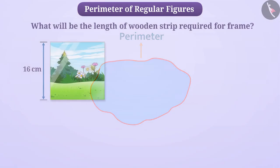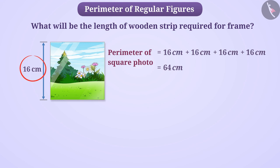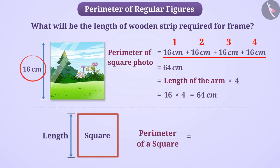The perimeter of this square photo will be 16 cm + 16 cm + 16 cm + 16 cm, which is equal to 64 cm. Here, you can see that the length of the side is added 4 times. We can write this by multiplying the length of the side by 4, so the perimeter of this square photo is 16 multiplied by 4 is equal to 64 cm. In this way, the perimeter of a square can be obtained by multiplying the length of one of its sides by the number of its sides.